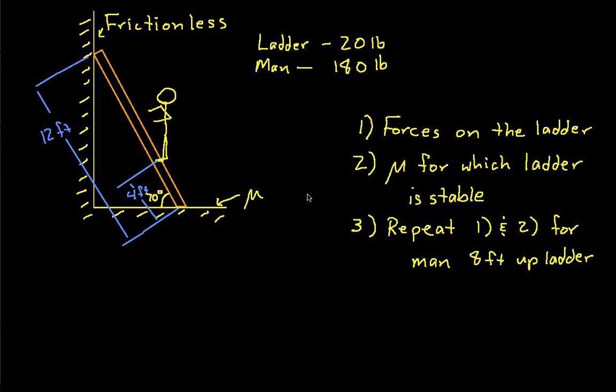We'll assume that the ladder weighs 20 pounds and that the center of gravity of the ladder is halfway up it. The man weighs 180 pounds. We'll assume that the ladder is leaning against a frictionless wall and is placed on a surface that has a coefficient of friction which is mu.